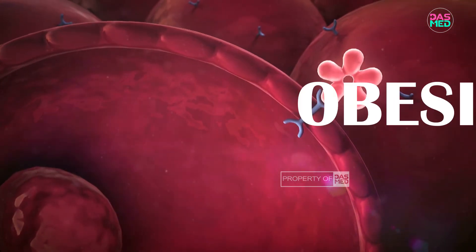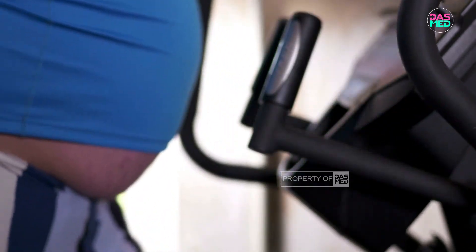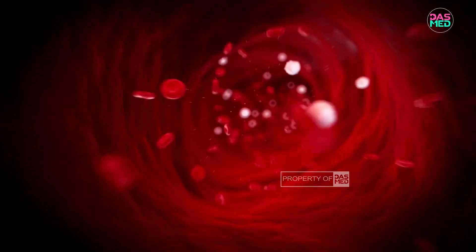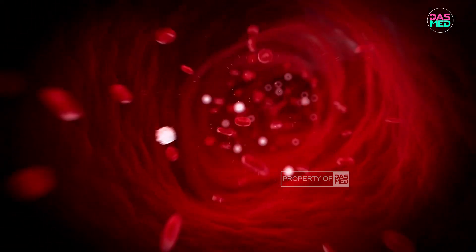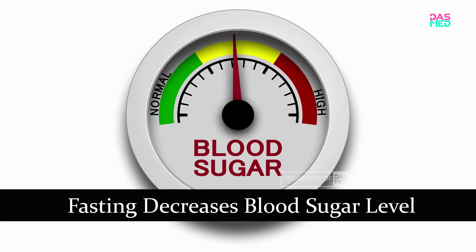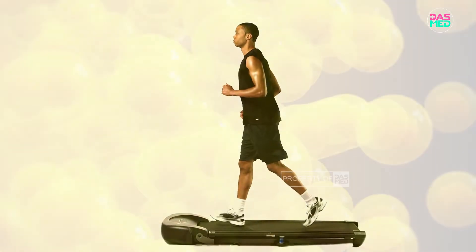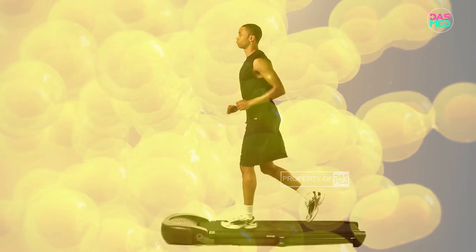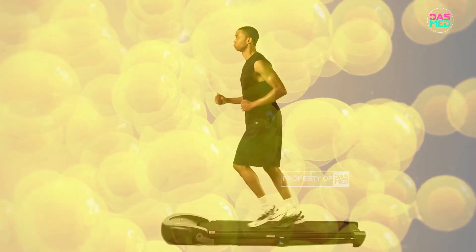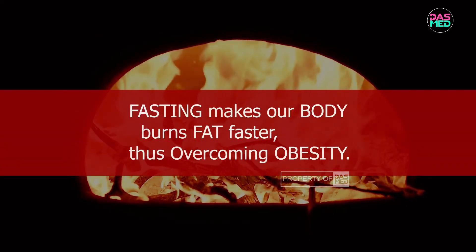In general, people with obesity suffer from high insulin resistance in their body. By fasting — refraining from eating and drinking in a certain period of time — glucose will be transported from the bloodstream to our body cells more efficiently. Fasting can decrease one's blood sugar level and reduce the body's insulin resistance. Furthermore, once carbohydrates or glucose in our body are burned to produce energy, fat will be the next substance to be burned. In other words, fasting can make our body burn fat faster, helping to overcome obesity.